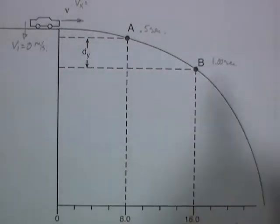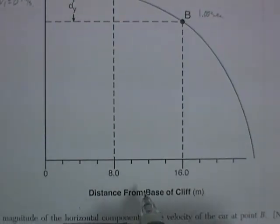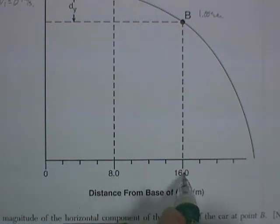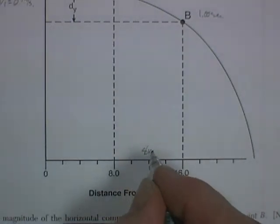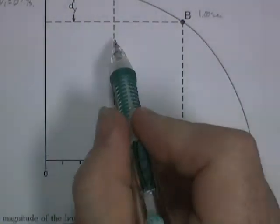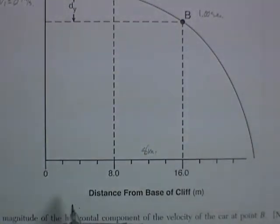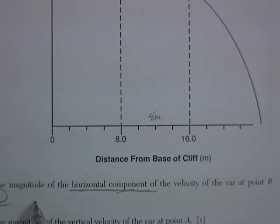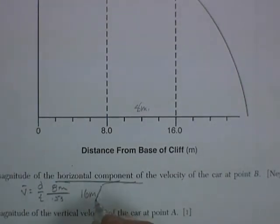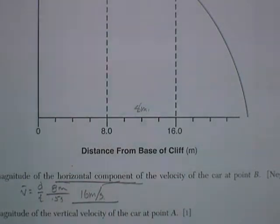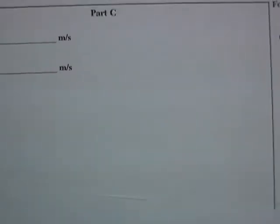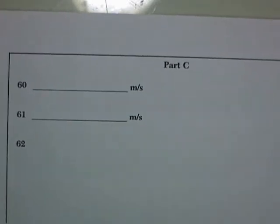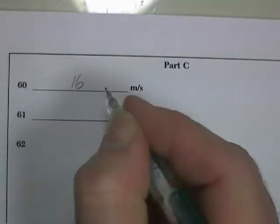From A to B, it travels a distance of, from 8 meters to 16 meters, so that's a distance of 8 meters. And it does so in a time of half a second. So velocity, average velocity, is going to be distance over time: 8 meters divided by 0.5 seconds gives us a velocity of 16 meters per second in the horizontal direction. And so we place that right here for a single point, 16 meters per second.